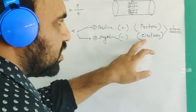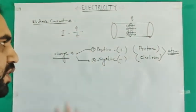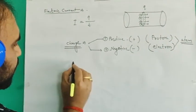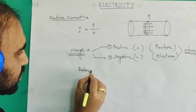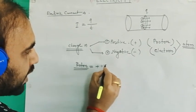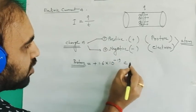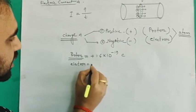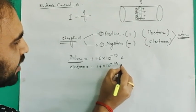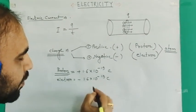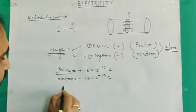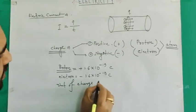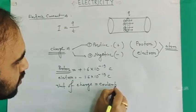Now, about this proton and electron — you all know from class 9 chemistry. This proton charge is positive 1.6 × 10⁻¹⁹ coulombs. The coulomb is nothing but the unit of charge. So the unit of charge is coulomb.